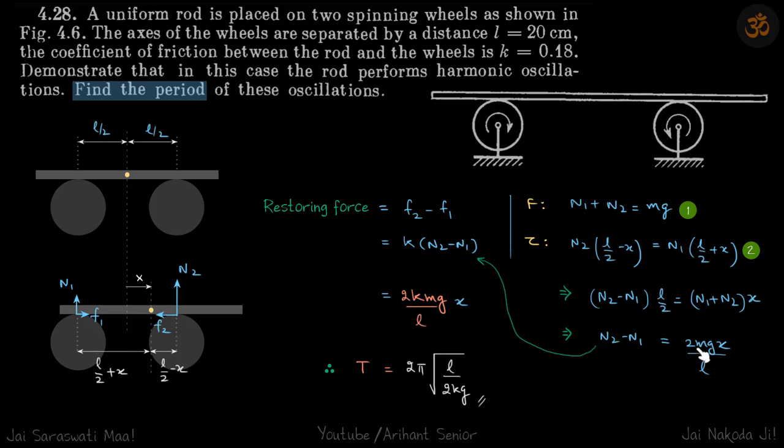So n2 minus n1 is 2mgx by l. We put that here, and we get our restoring force in terms of a constant into x. This constant is k, so the time period will be 2 pi root m by k. We do that and get our answer.